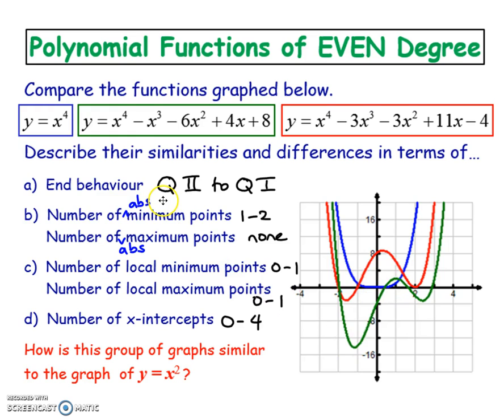Generally, all positive leading coefficient quartics or even degree functions will extend from quadrant two to one, so it should start here and end over here. You should get something like one to two minimum points. You could have an absolute minimum point right here, and if it was like a symmetrical W, you could get another one right over here.